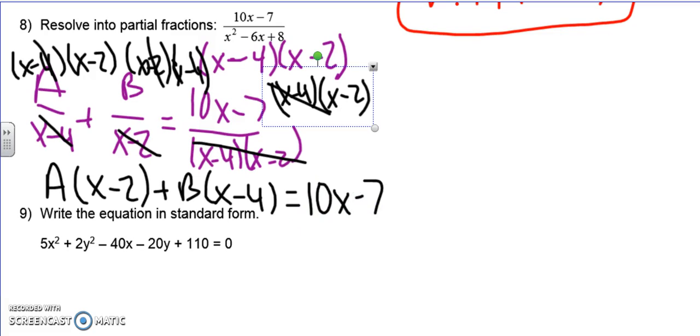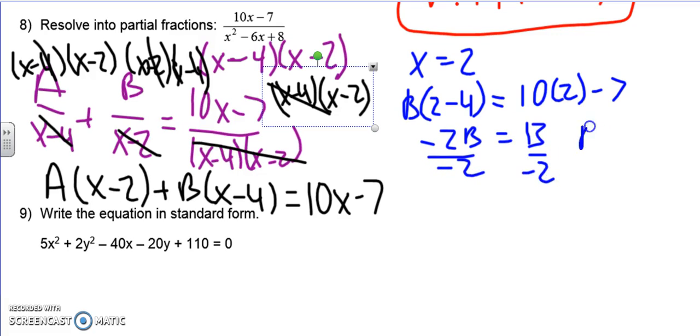So in order to get rid of a, I need to make x equal to 2. That will get rid of the a. So I'm plugging 2 in for all my x's. So I'm going to get b times 2 minus 4 equals 10 times 2 minus 7. So I have negative 2b. Over here, 20 minus 7, 13. Divide by negative 2. So b is negative 13 over 2. All right, that's fine.